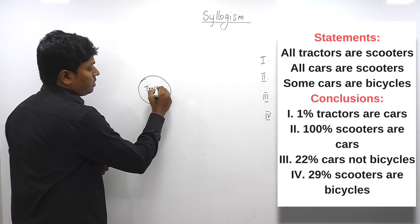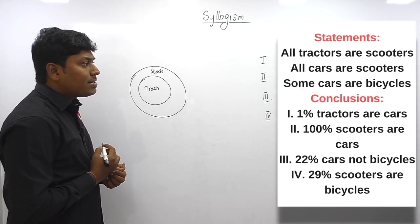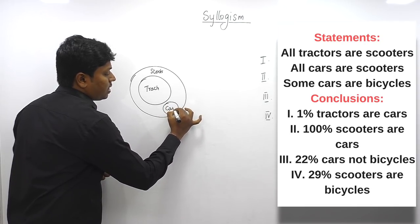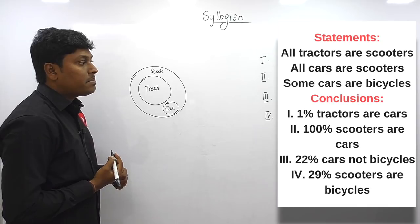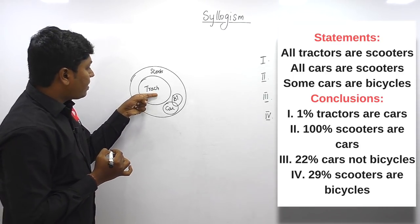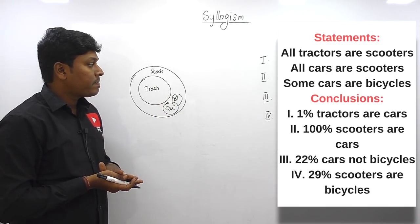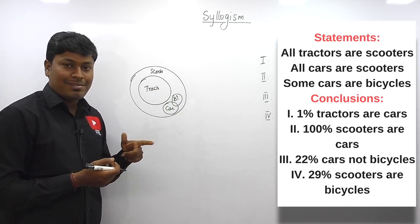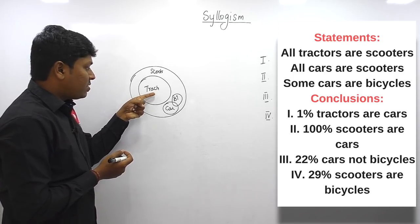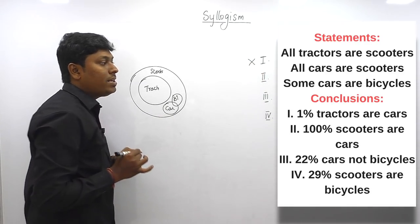Question 3. All tractors are scooters, all cars are scooters, and some cars are bicycles. Let me move to conclusions. Conclusion 1: 1% — meaning some — some tractors are cars. This is a basic conclusion, but there is no connection between tractor and car, so conclusion 1 is false.